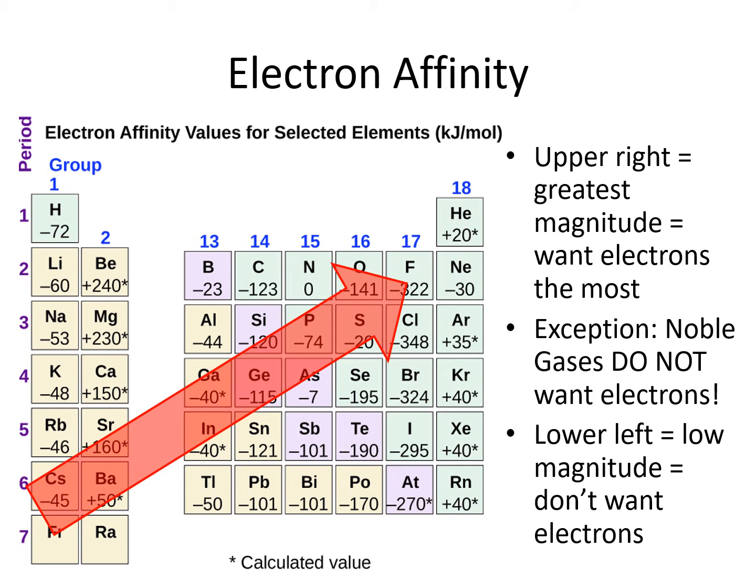Cesium, for example, has a value of negative 45, which means that not much energy is released when the atom gains an electron. Cesium has a low electron affinity, meaning it does not want electrons.